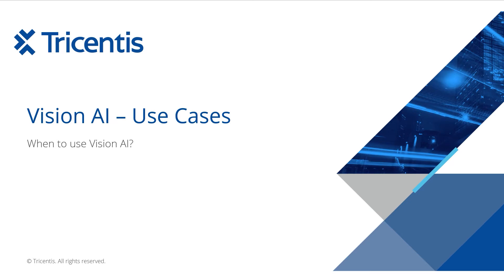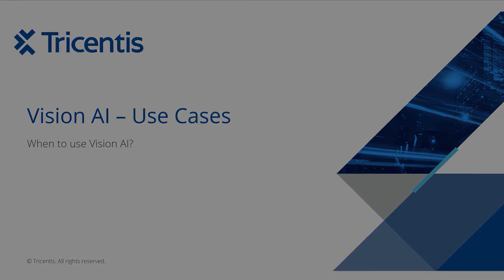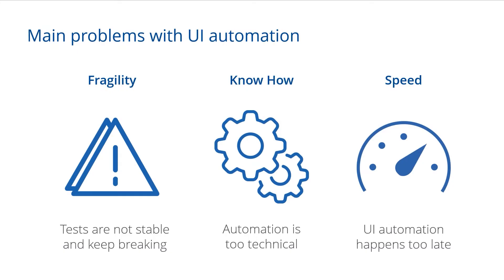When creating Vision AI, which is a test automation tool to help you with your UI test automation, we first looked at the main problem areas that are out there when it comes to UI testing. The main problems can be grouped into three areas.